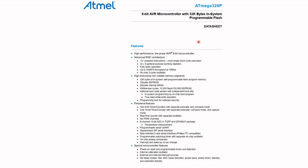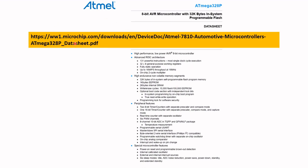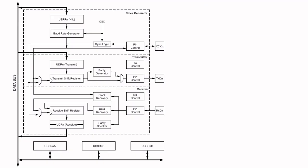Now to help me do that, I've downloaded the ATmega 328 data sheet. I've shown the front page of the data sheet here. You can download this same data sheet from the link shown, and I've included this link in the description. This is a block diagram of the USART, which I've extracted from the data sheet.